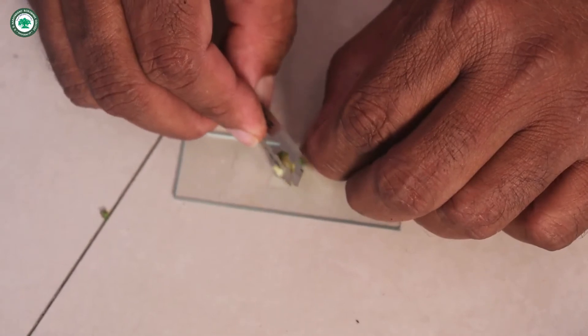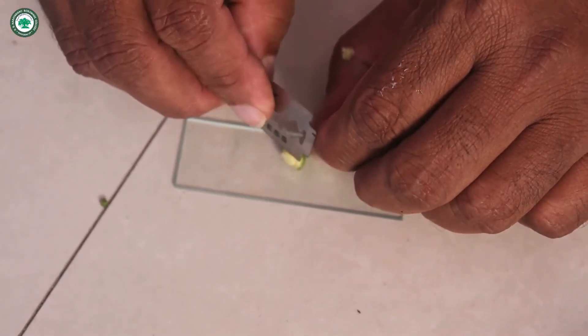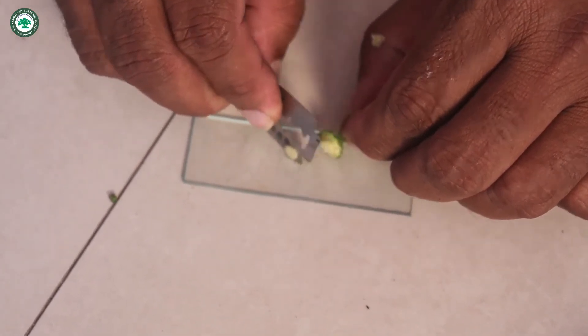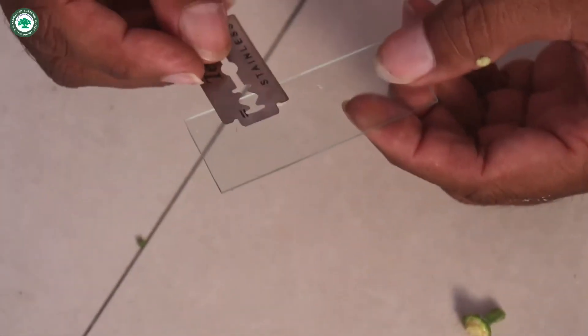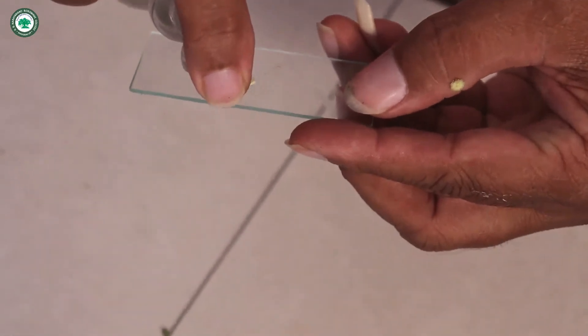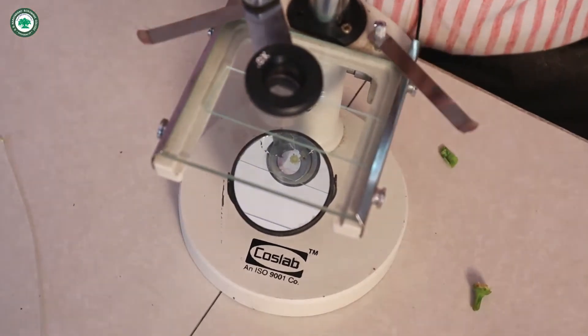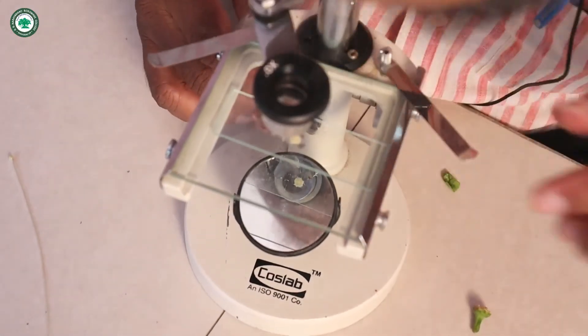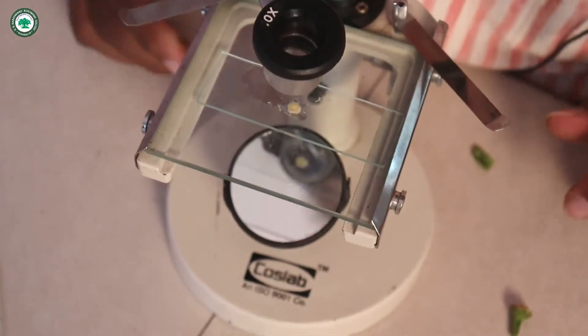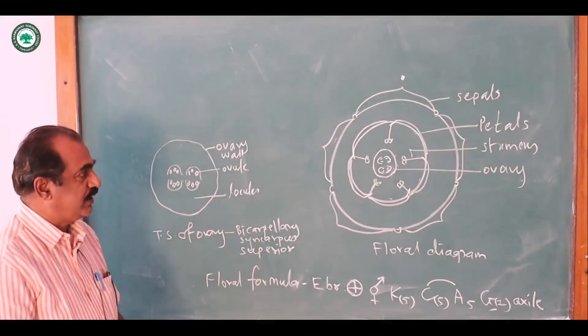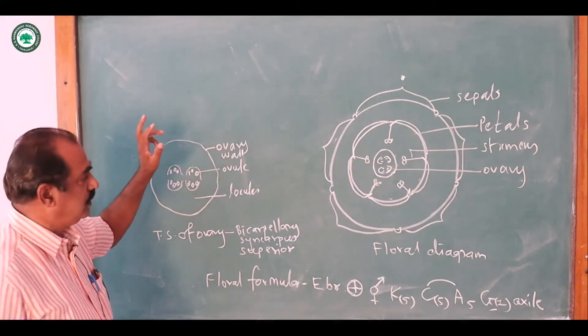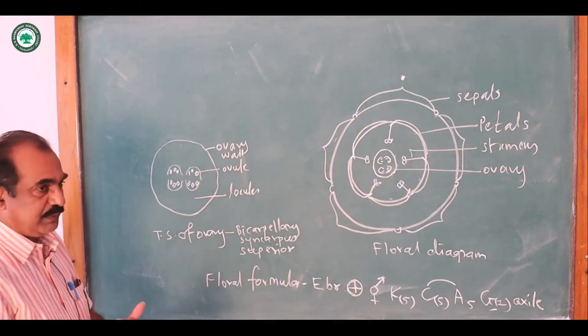Now this is the TS of the ovary which shows the different details. Now we have to observe it under the dissecting microscope. Now this TS of ovary we can see it on the chart. Now the TS of ovary, this is the TS of ovary, this is the ovary wall, ovule and inside this there are the locule. Now this ovary is bicarpellary, syncarpous and superior.